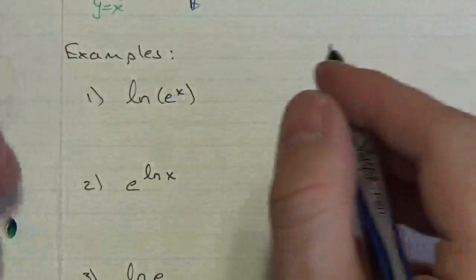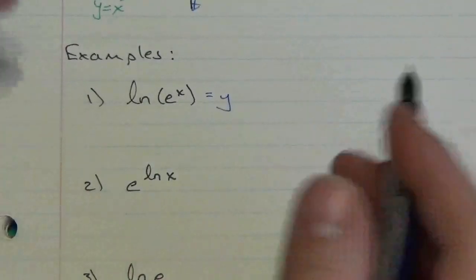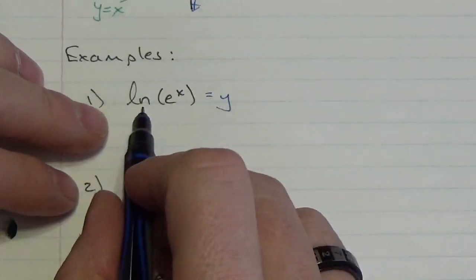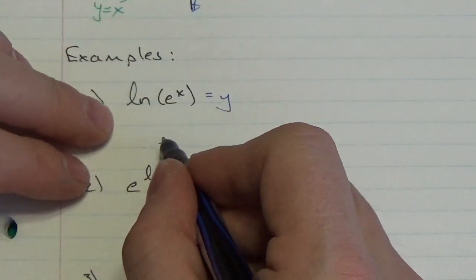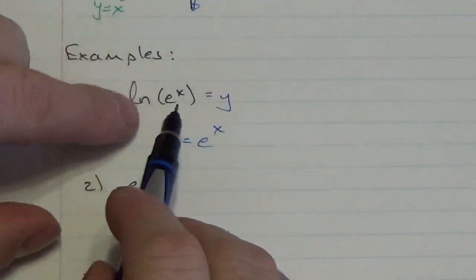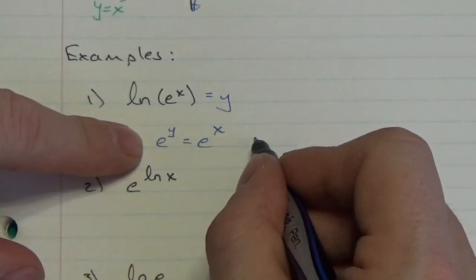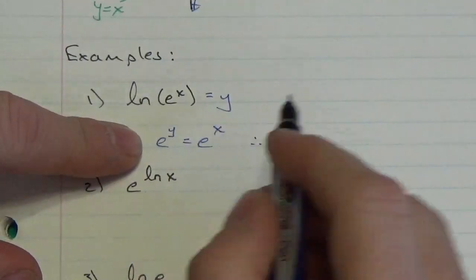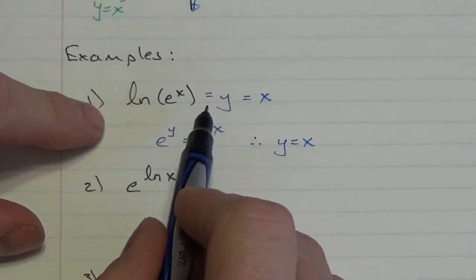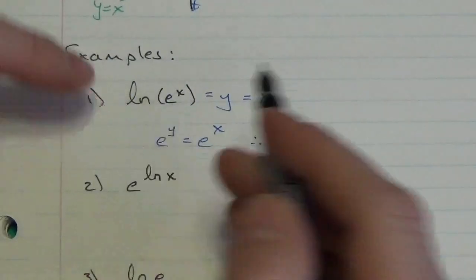If I've got the natural log of e to the x, what is that equivalent to? If you don't recognize the relationship, let's call this y. Once I've got a logarithmic function equal to y, I can use the properties of logarithms. This is a log base e, so e to the y has to equal e to the x. My bases are the same, so therefore y is equal to x, meaning the natural log of e to the x must be equal to x. That makes sense because the natural log and the exponential function are inverses of each other — log base a of a to the x is equal to x.